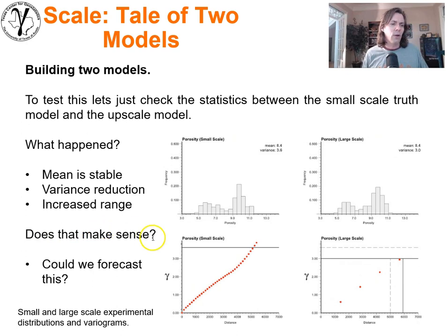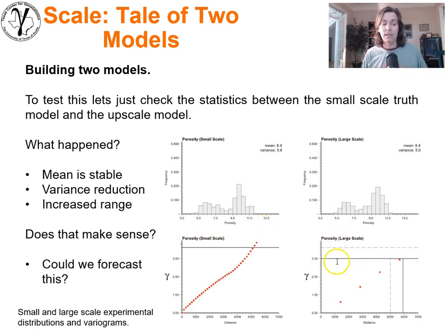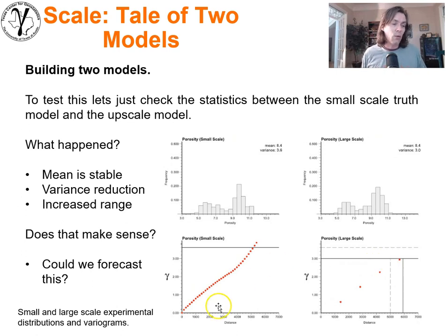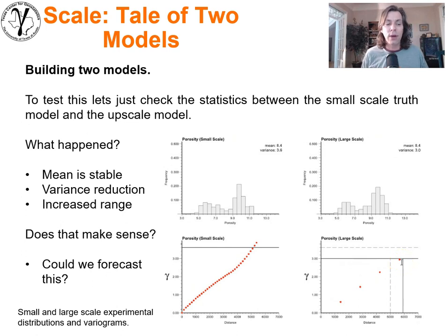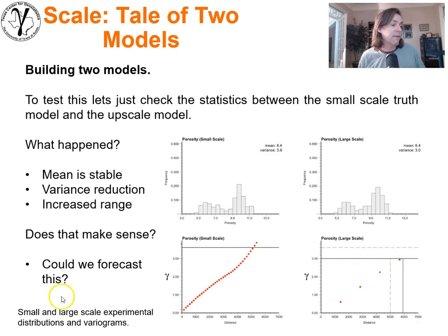What about the variogram? Looking at the variogram — not normalized or standardized — the variance has decreased, so the sill has dropped. The previous sill for the high resolution has now dropped after upscaling. Looking at the range, it was around 5,000 or so, and the result after upscaling is that the range increased to about 6,000. So the range has also increased — we have inflated the spatial continuity in the phenomenon. Let's talk about what we've done and how we can predict these changes in statistics.